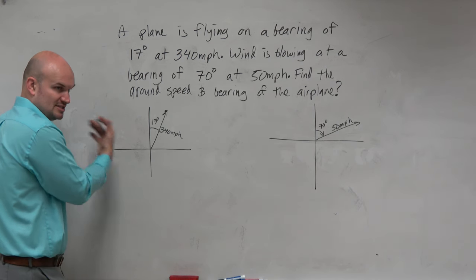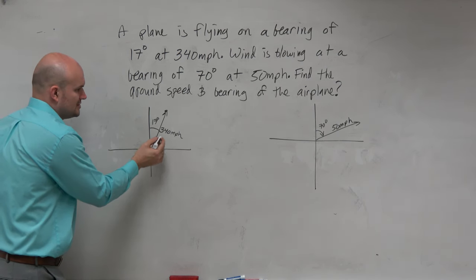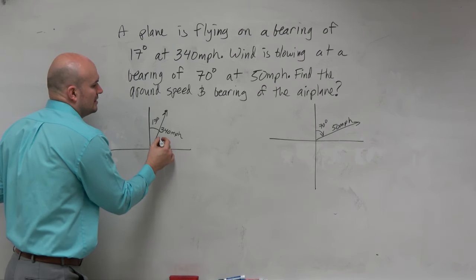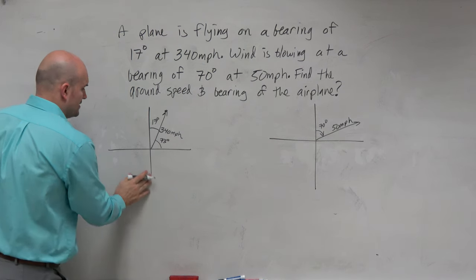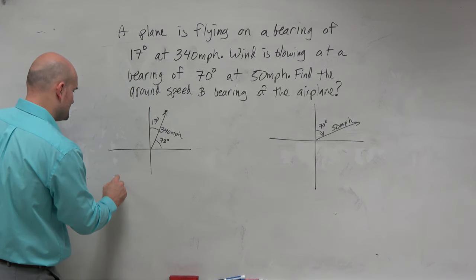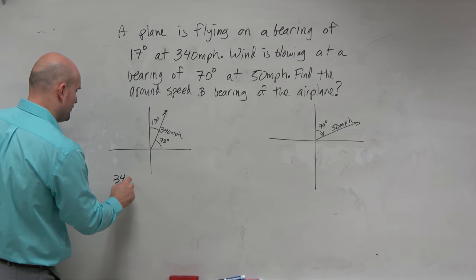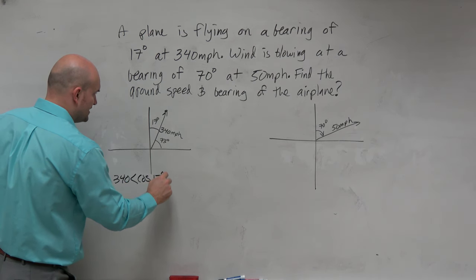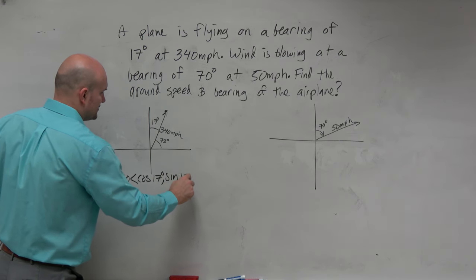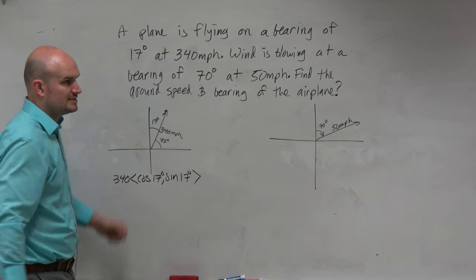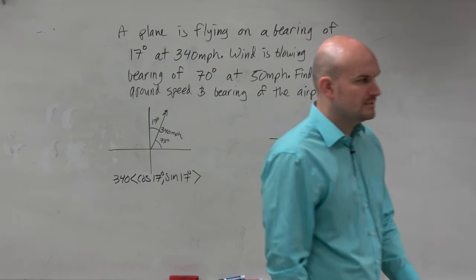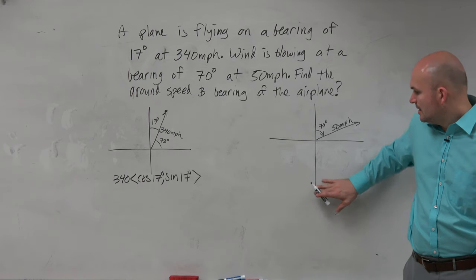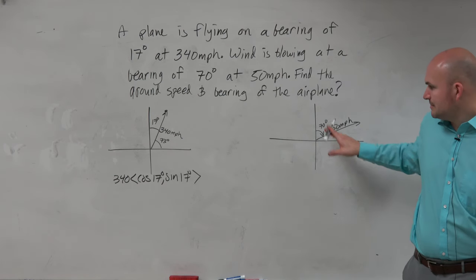We have to use our standard form in our calculator. So if that's 17 degrees, then we know that this is going to be 73 degrees. So I'll write this vector as 340 times the cosine of 73 degrees, sine of 73 degrees. And that's all I asked you to do from this point — I think that's fairly basic. Now we can do the same thing for the wind vector.